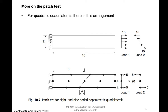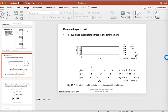Another type of patch test for quadratic quadrilaterals: for example, if you are interested in some beam problem, just use a couple of elements with non-regular elements to check for robustness. This is just one example you can use to check for the robustness of quadratic elements. We'll stop here and I'm going to make another video for convergence.